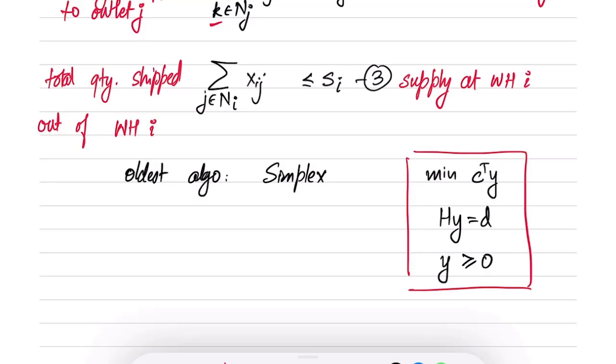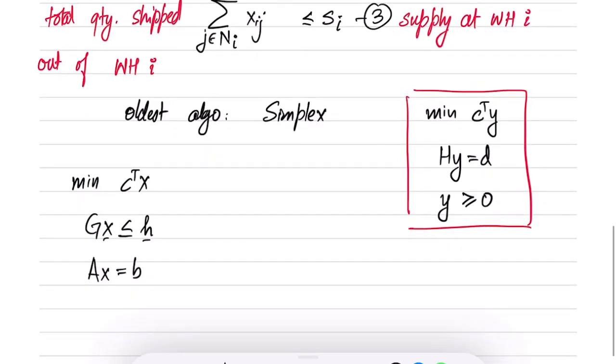Can every linear program be expressed in this form? What if I have a linear program of this form: c transpose x, Gx less than or equal to h, and Ax equal to b? Suppose I have a linear program of this form. Can I always get an equivalent linear program of this form? The key is to realize that on this side we have only non-negative variables, while on this side we have variables which could be positive or negative. We need to convert into a form that will make the variables positive or negative.